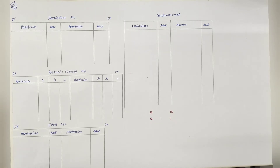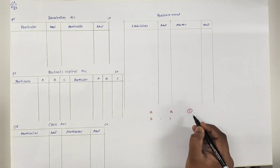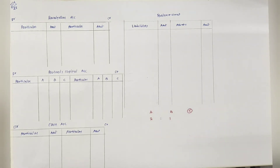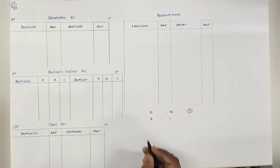अब देखते हैं उसके adjustments. लिखा है: They admitted C as a new partner on 1st April 2016. New partner C को admit करते हैं. A sacrifices 1/12th share and B sacrifices 1/6th share.